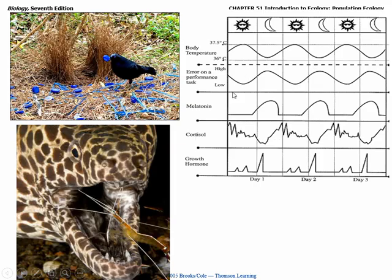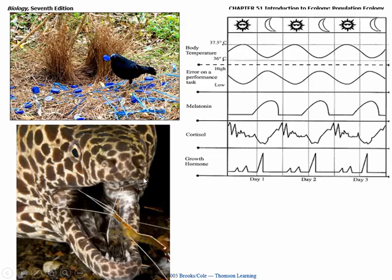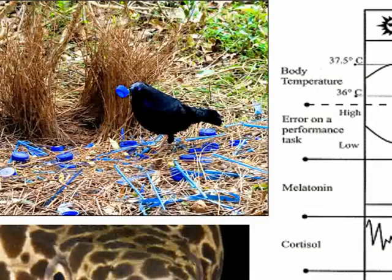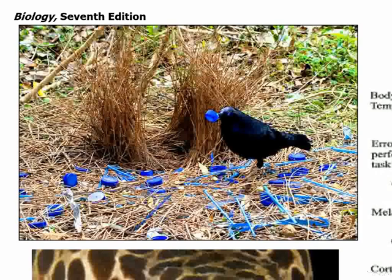The top right corner is an example of an organism's relationship with the environment. This is actually a human — you can tell because of the body temperature, which hovers between 36 to 37 and a half degrees. You can see body temperature goes up and down depending on the time of day. You can see hormones like cortisol levels and growth hormone — they're controlled by the environment, and the environment plays a very important role. That leaves us with the last picture — this is an example of a relationship between members of the same species. This is intraspecific.